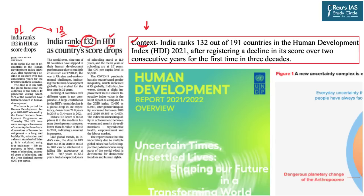Why? Because it has certain factual information — for example, the ranking of India or the various parameters and indicators used to calculate the HDI. It is also relevant from the mains perspective because it can be utilized in essays and answers in GS 1, 2, 3, as well as 4. This topic does not fall in any particular section, but can be used across all papers depending on the questions asked.